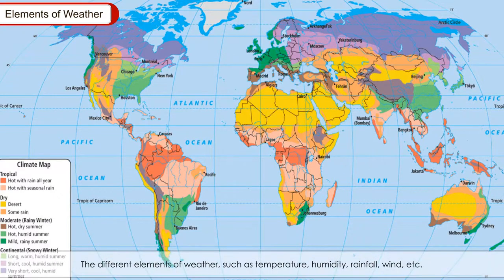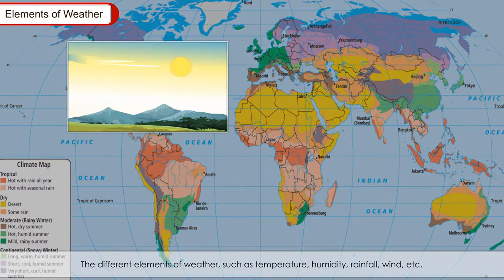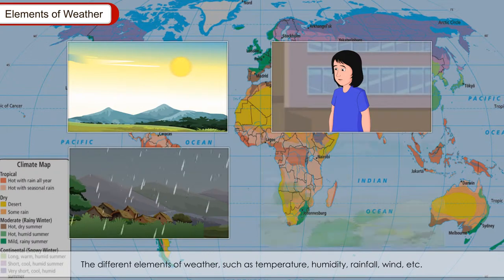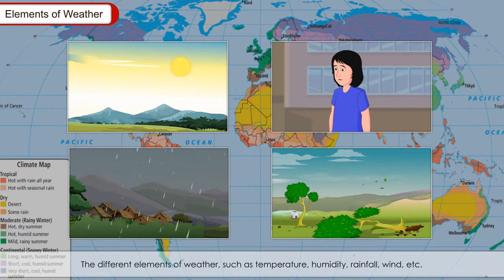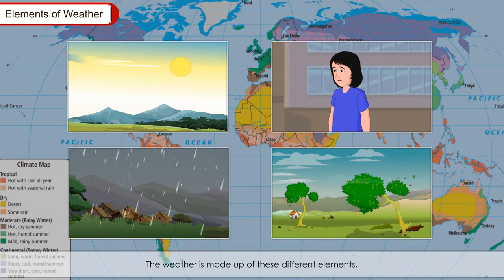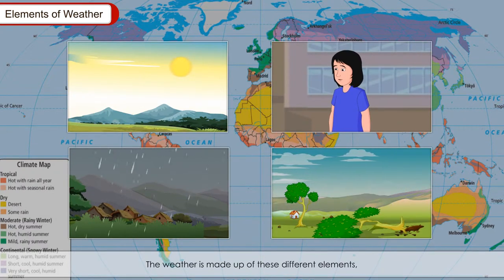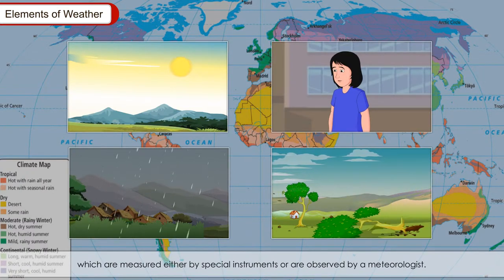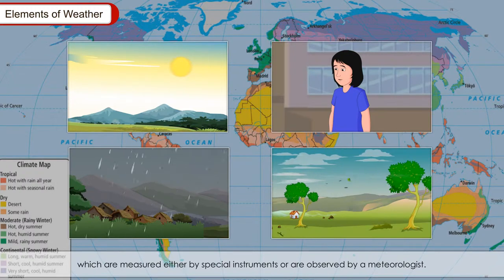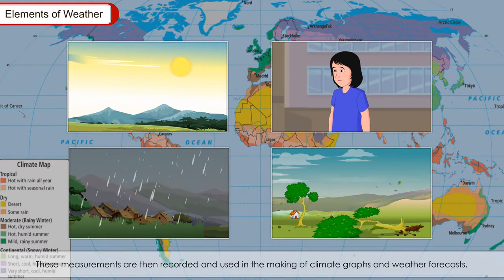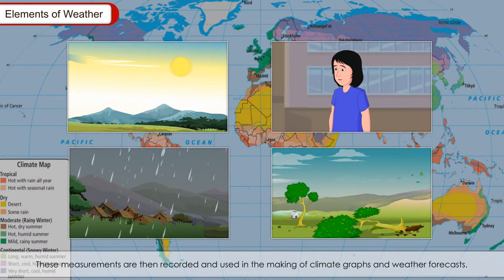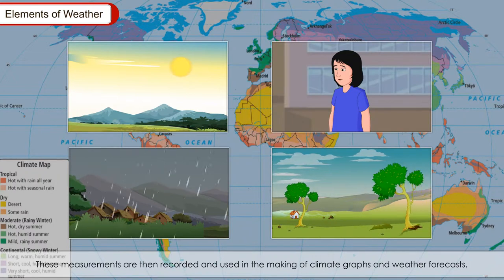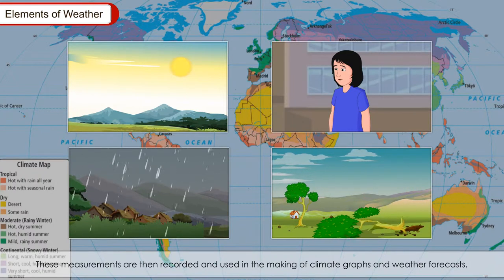Elements of weather: The different elements of weather such as temperature, humidity, rainfall, wind, etc. make up the weather. These are measured either by special instruments or are observed by a meteorologist. These measurements are then recorded and used in the making of climate graphs and weather forecasts.